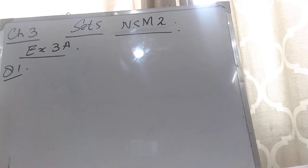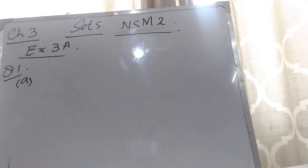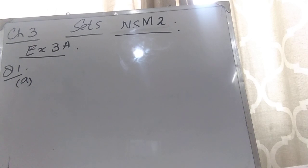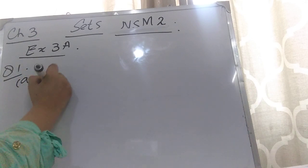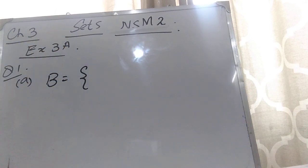Question number 1: if B is the set of odd positive integers less than 10, list all the elements of B in set notation. Integers are negative and positive, but here it's mentioned to write down the positive integers, and specifically the odd positive integers. So you have to write the odd integers: 1, 3, 5, 7, and so on. They are saying to write down all the elements of B in set notation. B represents the set of odd positive integers which are less than 10.